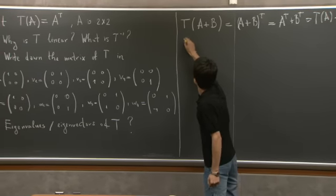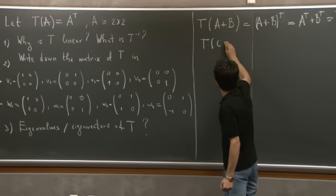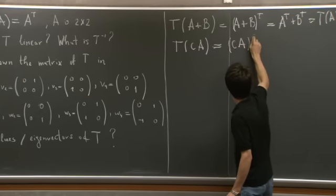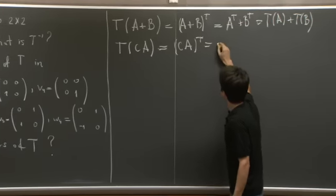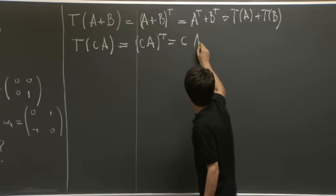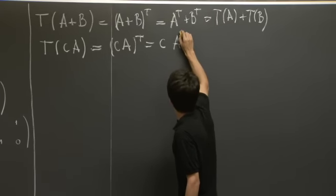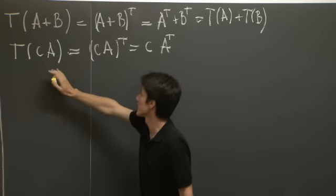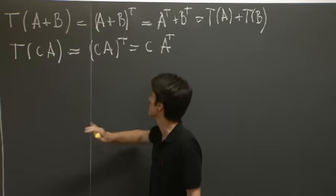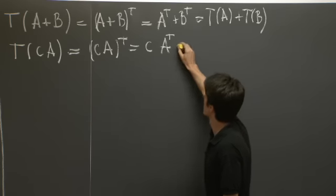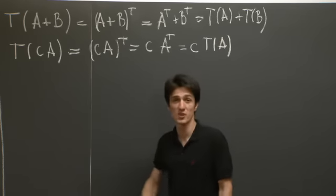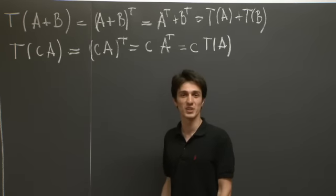Similarly, it takes a multiple of a transformation into the multiple of the transformations. So it takes the matrix C times A to C times A transpose, which is C T(A). So it is a linear operator.